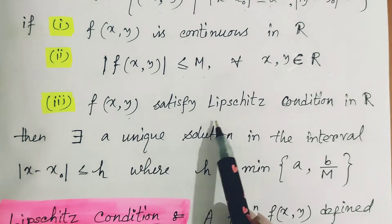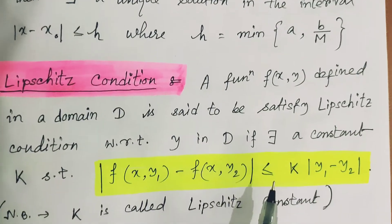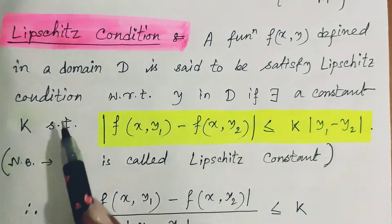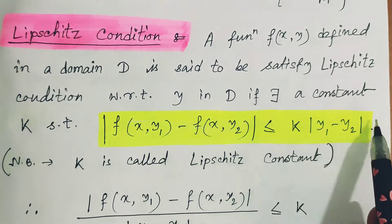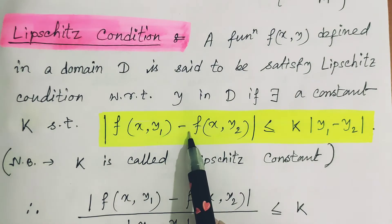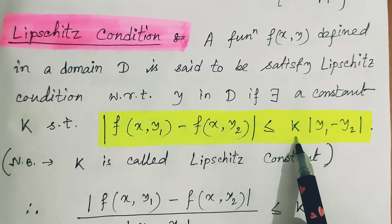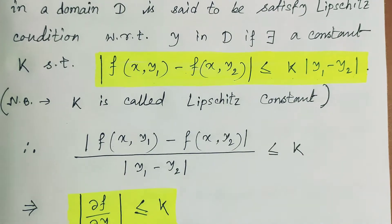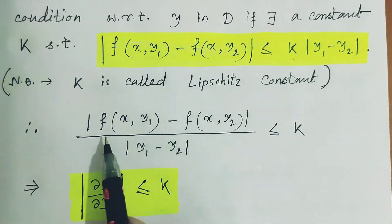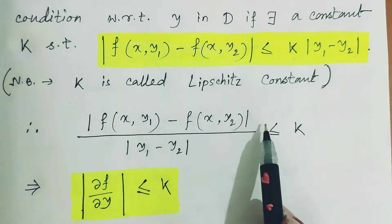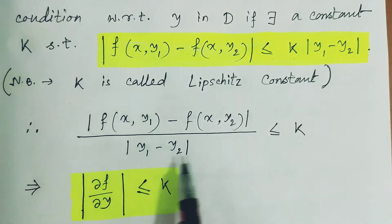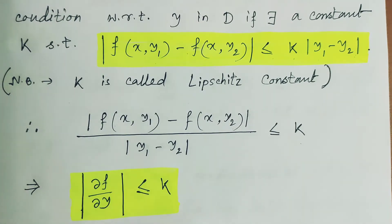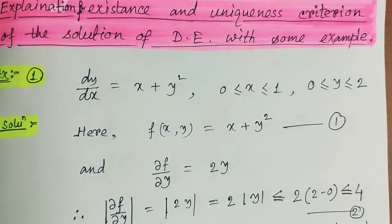The third condition requires the Lipschitz condition. A function f(x,y) defined in a domain D is said to satisfy the Lipschitz condition with respect to y in domain D if there exists a constant k such that |f(x,y₁) − f(x,y₂)| ≤ k|y₁ − y₂|, where k is called the Lipschitz constant. We can rewrite this as |f(x,y₁) − f(x,y₂)| / |y₁ − y₂| ≤ k, which is essentially the partial derivative of f with respect to y, so ∂f/∂y ≤ k.